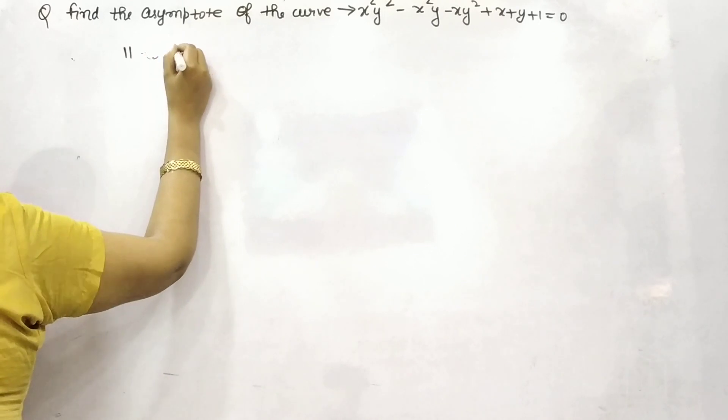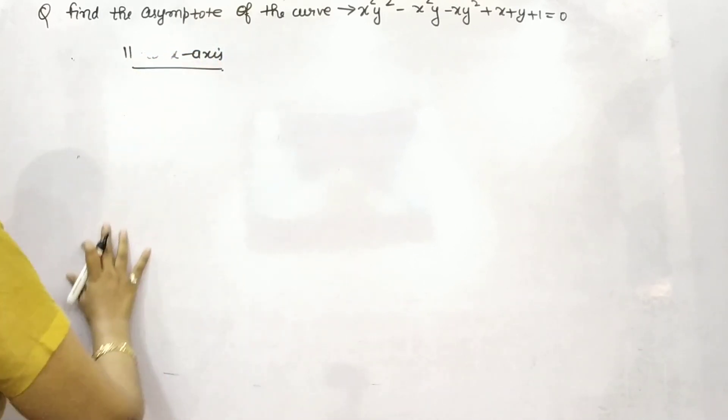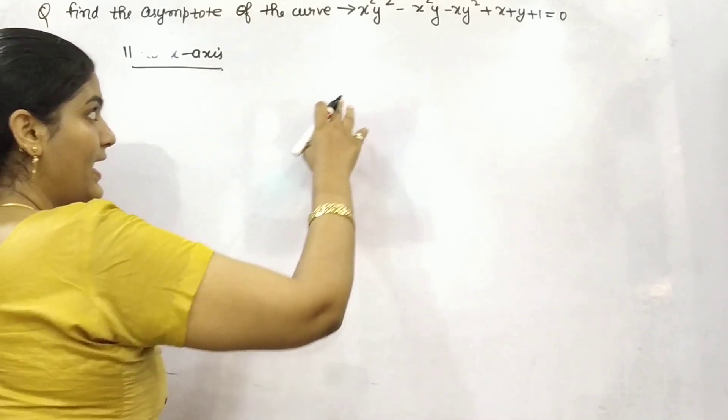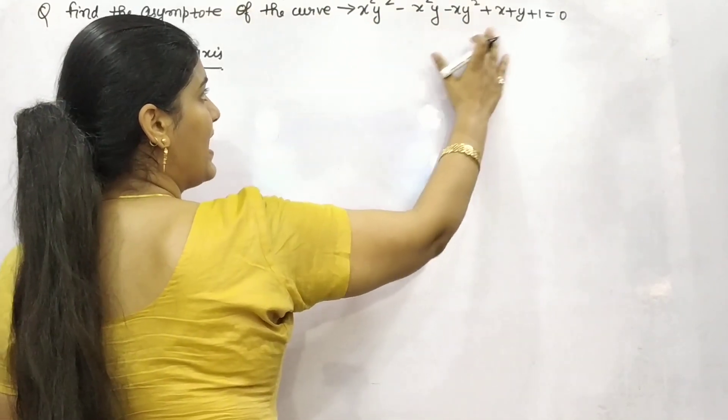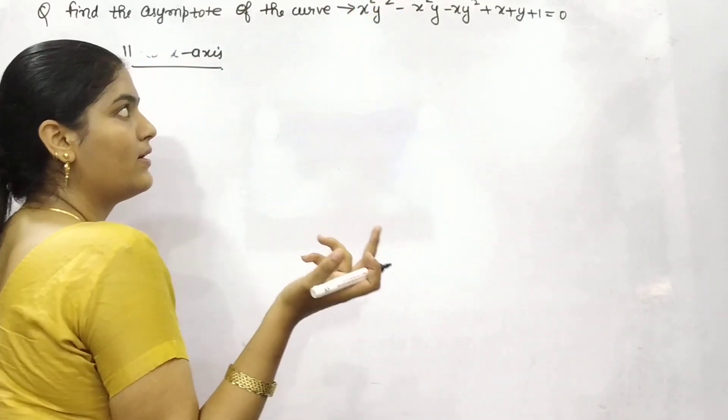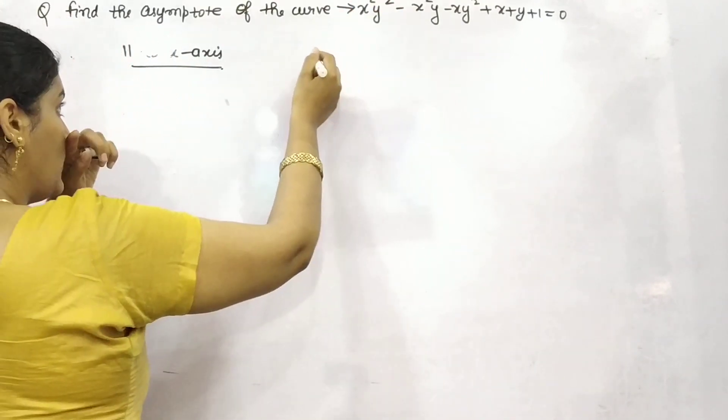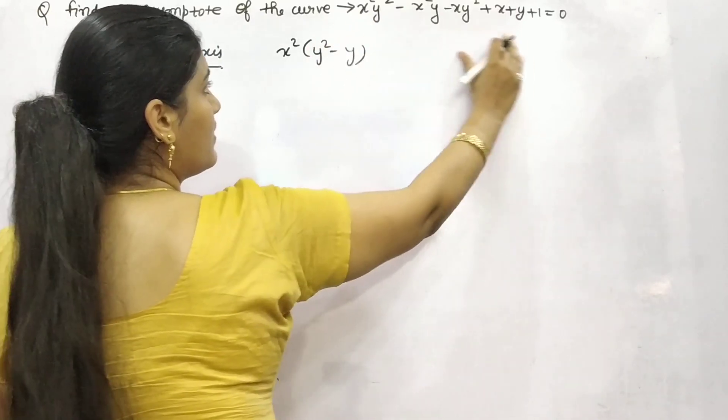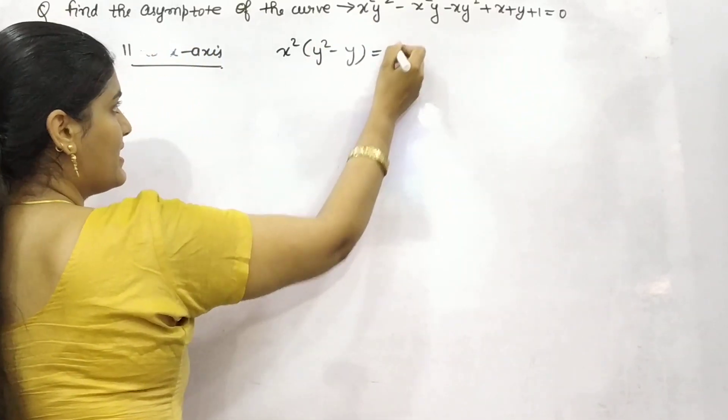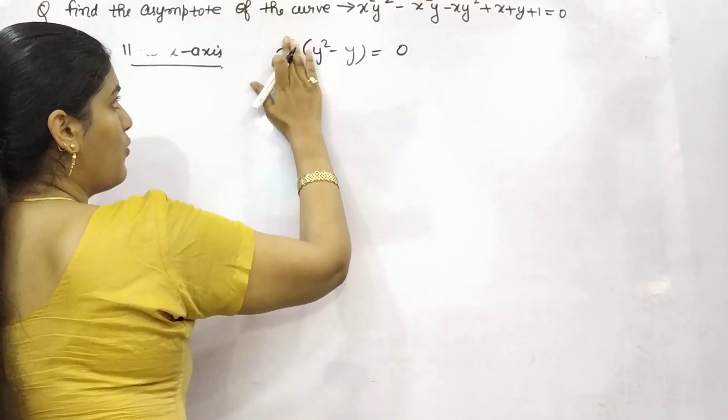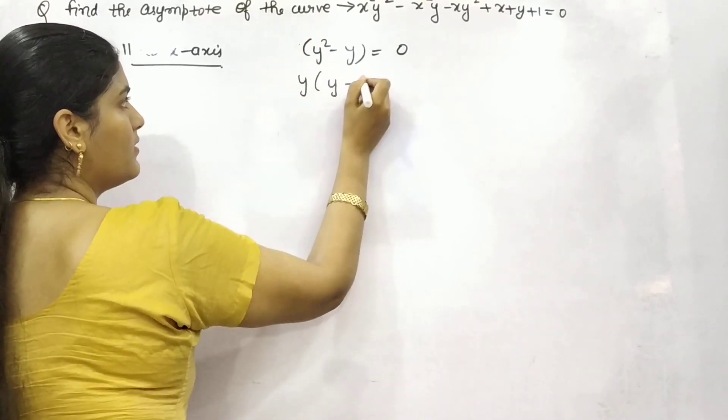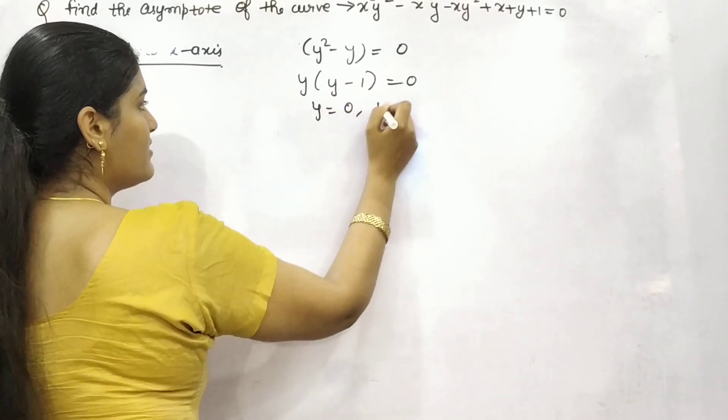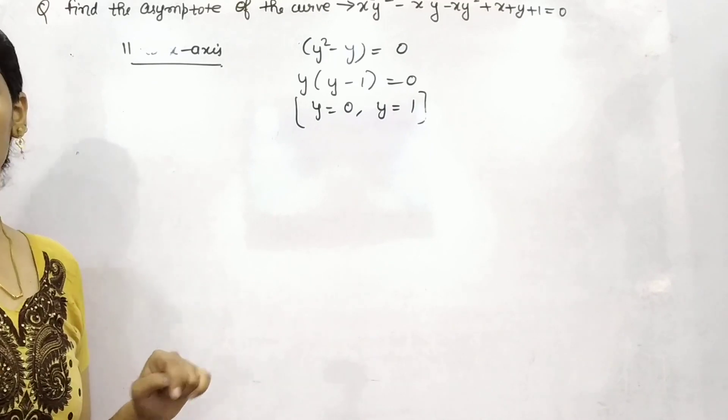For parallel to x-axis, take all the coefficients of highest power of x as 0. The highest power of x is x square, so take x square as common. What will you get? y square minus y. Put that as 0. Take y as common: y(y-1). You can put it as y equals 0 and y equals 1. So these are your two asymptote points.